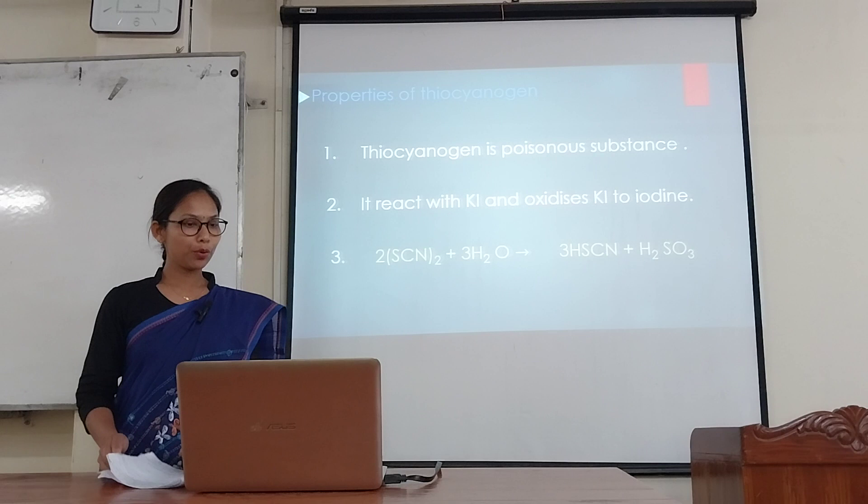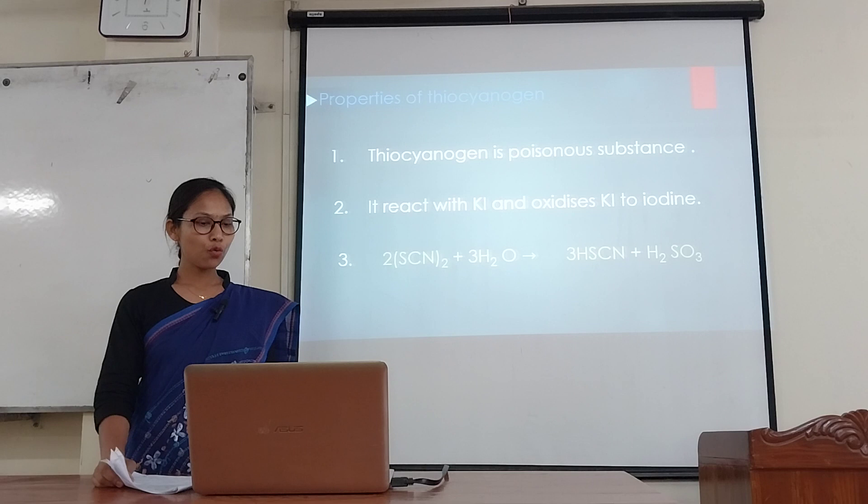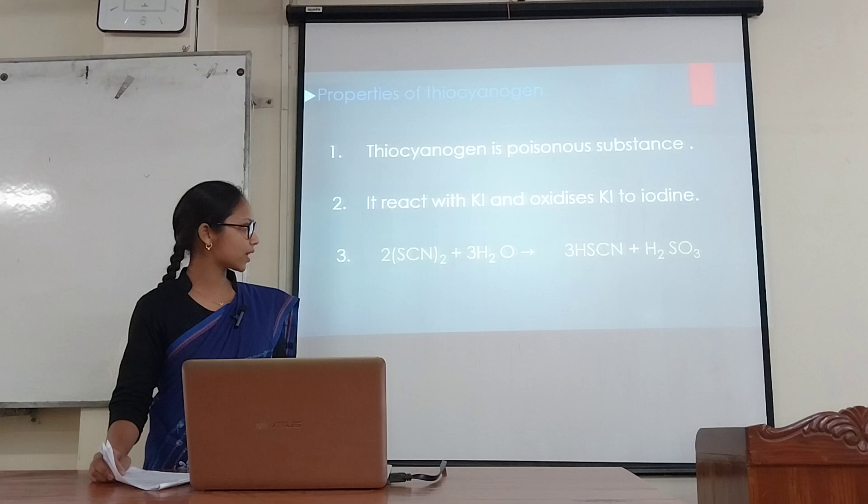Properties of thiocyanogen: thiocyanogen is a poisonous substance. It reacts with potassium iodide and oxidizes potassium iodide to iodine. When thiocyanogen dissolves in water, it undergoes a hydrolysis reaction and gives sulfurous acid and hydrogen thiocyanic acid.